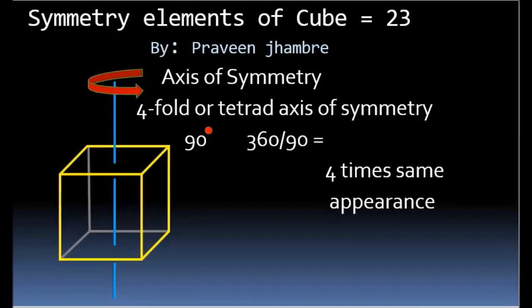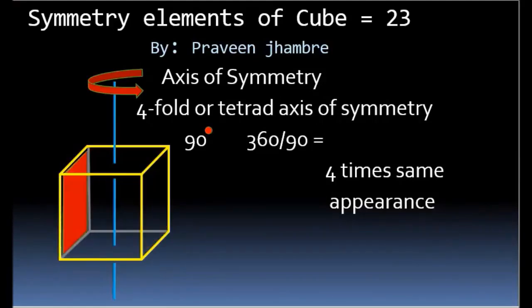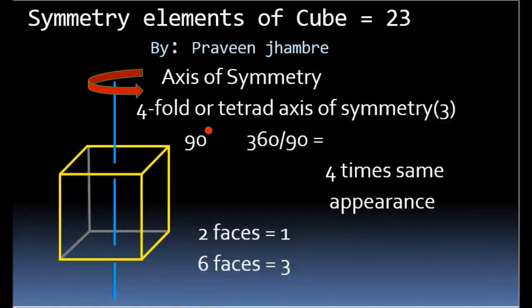The first is the four-fold or tetrad axis of symmetry. In the tetrad axis of symmetry, the imaginary axis passes through the opposite faces and through the center of the cube. If the cube is rotated through an angle of 90 degrees about this axis, it gives 360 divided by 90, that is four times the same appearance. Between two opposite faces we have one tetrad axis, so between six faces we have three tetrad axes of symmetry.